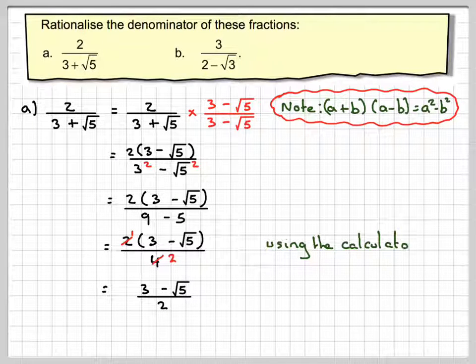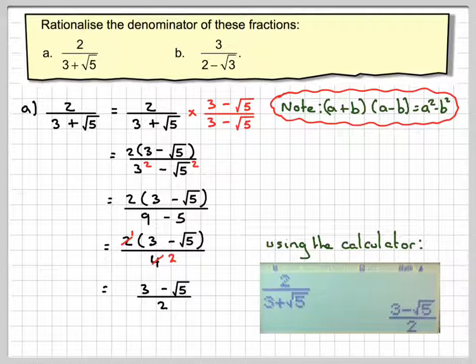Now if we use the calculator, we can see that 2 over 3 root 5 is the same as 3 minus root 5 over 2. So if you put this in your calculator, you have to be in math mode, making sure that you use the fraction button, then the calculator will do this for you if you're checking your answer. However, in an exam, you will have to show how to get from there to there with all the steps of the working.